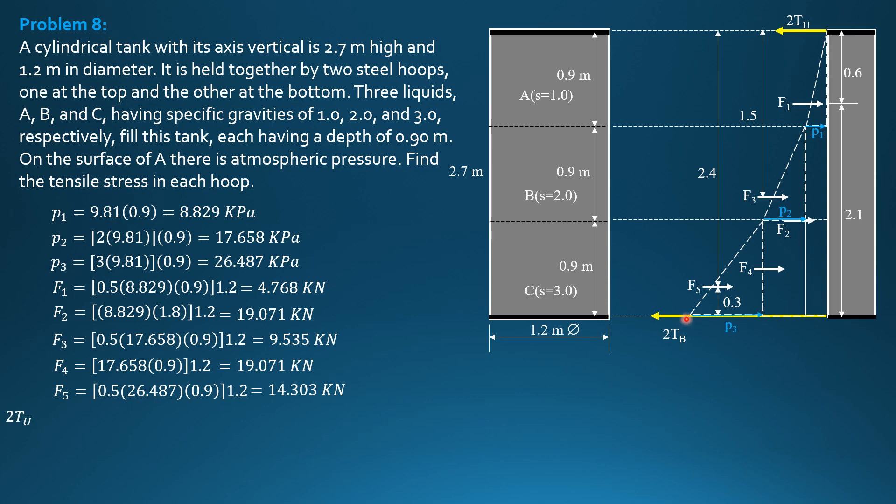So finally, we sum up moments about the bottom hoop equals 0. So 2 times tension in the upper hoop times 2.7 equals F1, 4.768 times 2.1 plus F2, 19.071 times 0.9 plus F3, 9.535 times distance from the bottom, 1.2. Then F4 plus 19.071 times distance from the bottom is 0.45. Then plus F5, 14.303 times 0.3. So computing for tension in the upper hoop, it is equal to 9.535 kilonewtons.